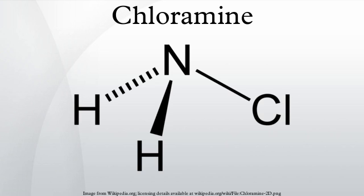Production: In dilute aqueous solution, chloramine is prepared by the reaction of ammonia with sodium hypochlorite: NH3 + OCl⁻ → NH2Cl + OH⁻. This is also the first step of the Raschig hydrazine synthesis. The reaction has to be carried out in a slightly alkaline medium.